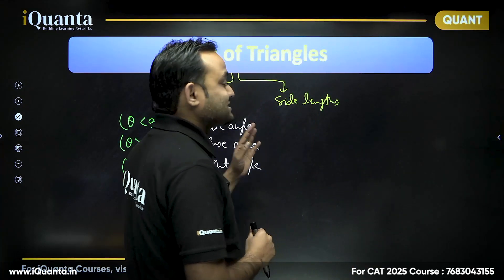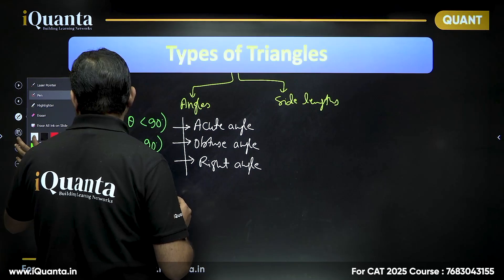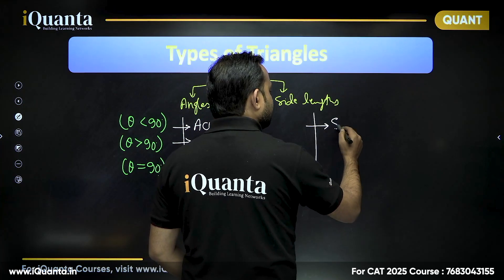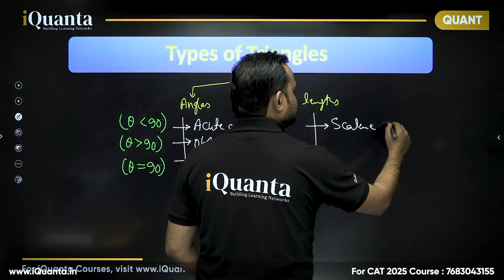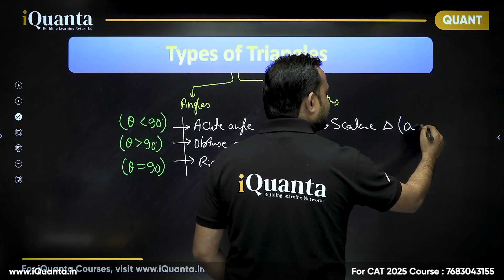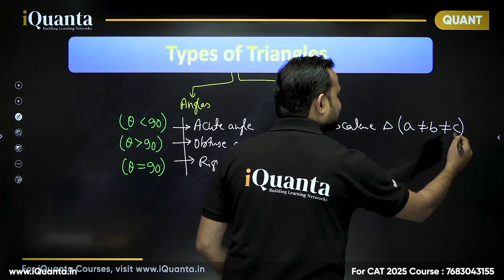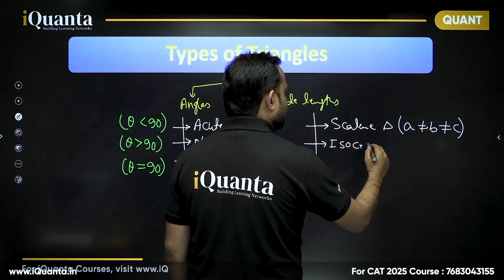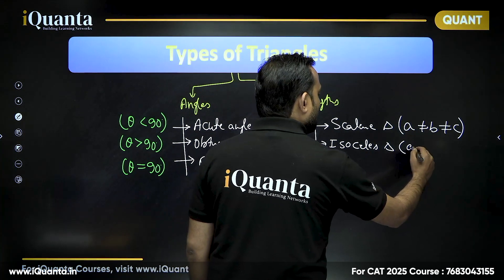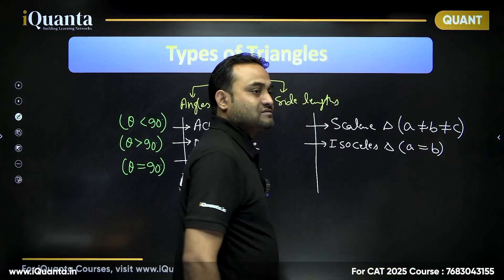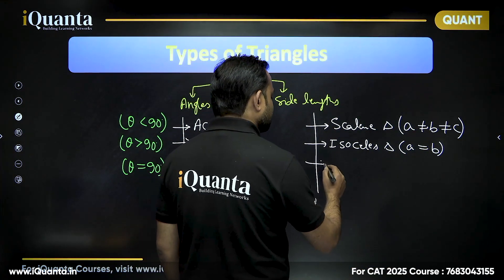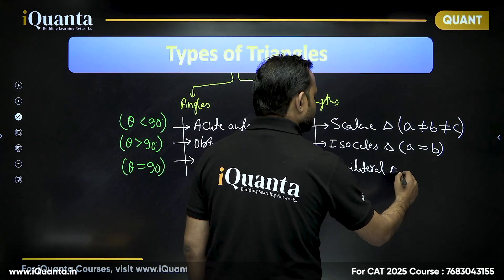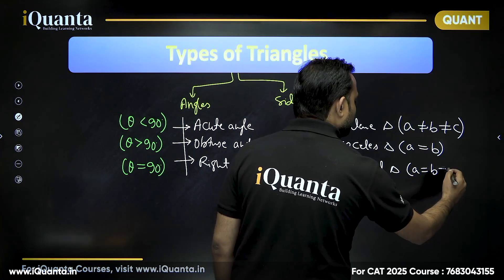If we talk about side lengths, there are again three different kinds of triangles. The first is a scalene triangle — in a scalene triangle, all side lengths are of distinct length. Then comes an isosceles triangle — in an isosceles triangle, two of the sides are of equal length, so side A equals side B. And then comes an equilateral triangle — in an equilateral triangle, all side lengths are of equal length.